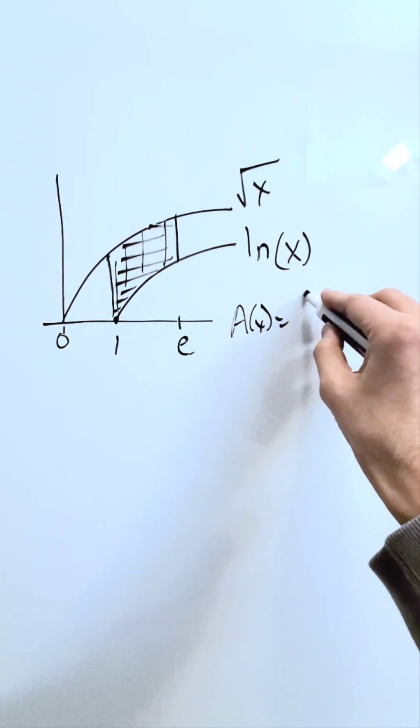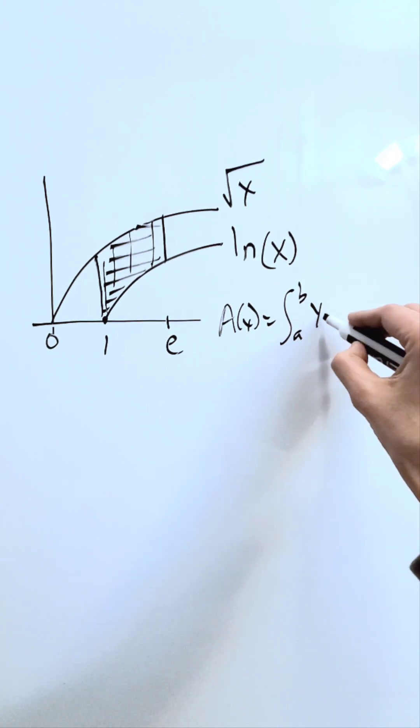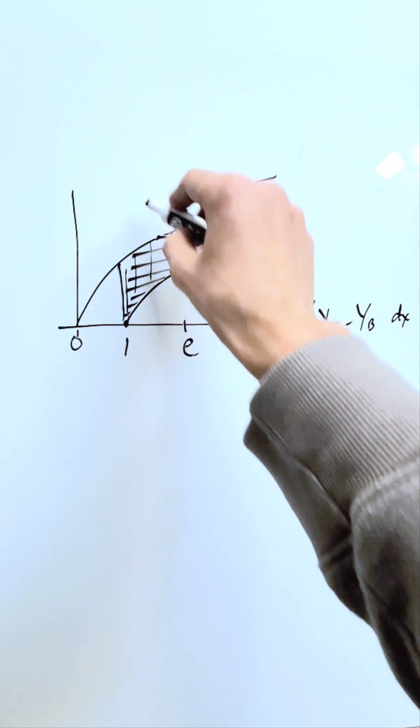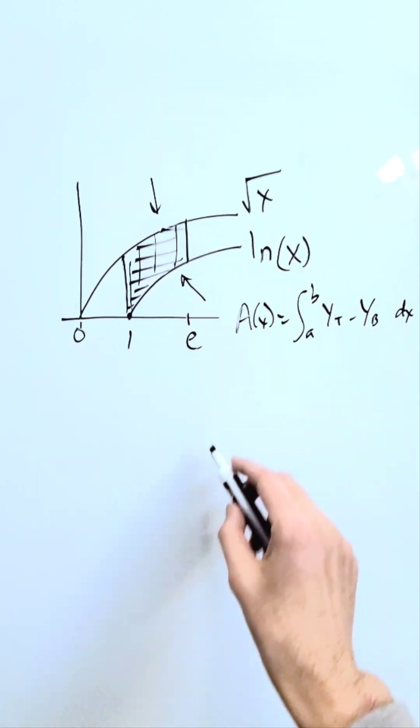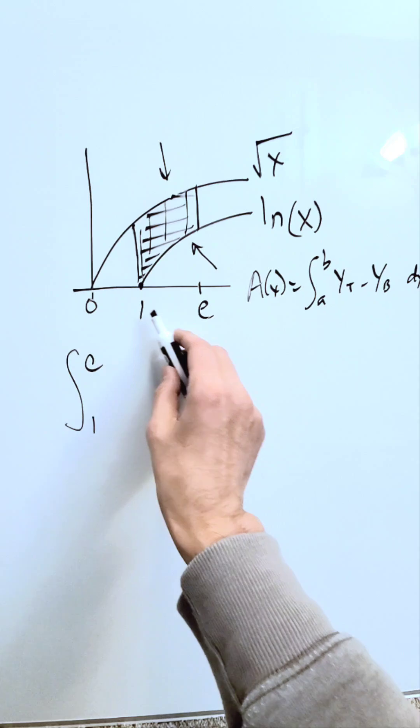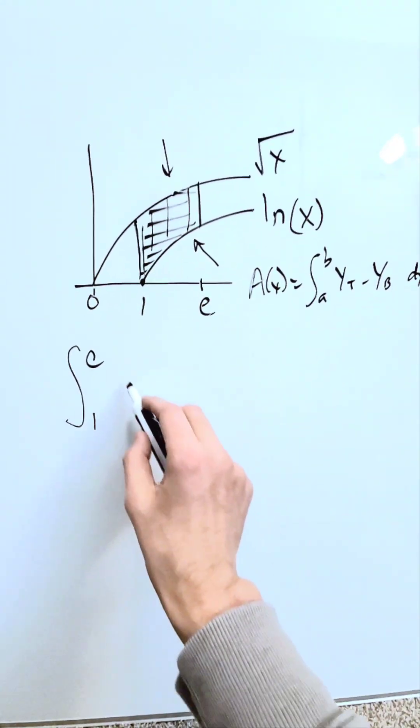You'll do an area with respect to x equals lower limit to upper limit of top boundary curve minus lower boundary curve dx. You know your top boundary curve is this root x, your lower boundary curve is the natural log x. Your lower limit is 1 and upper limit e, because that's the designation for the shaded region.